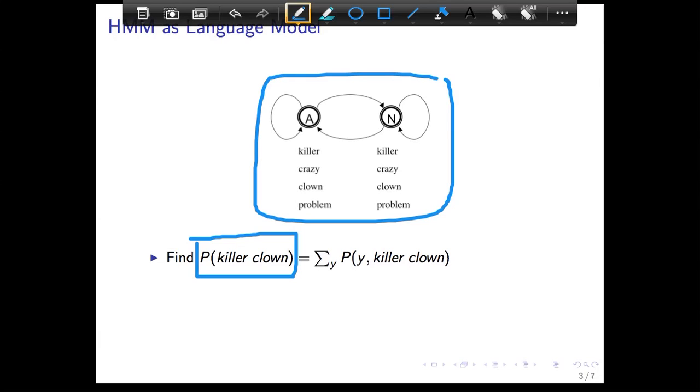If you want to find the probability of 'killer clown', we basically have to use the states. The only way to get rid of the states is to take every possible state sequence and simply sum over each possibility.